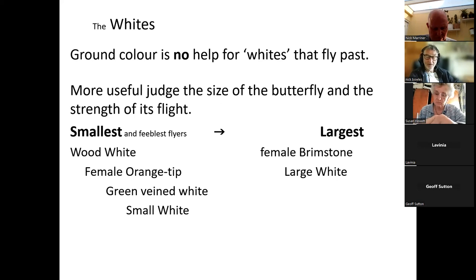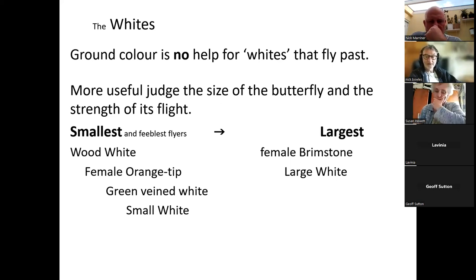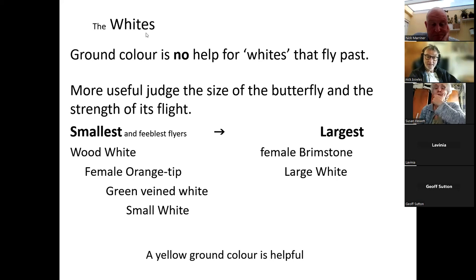A small white looking to feed on flowers or lay eggs will appear to have a slightly more hesitant, slower flight — so you can't use this as a reliable way to identify them. If the white butterfly is obviously bigger than most of these, it's either a female brimstone — which definitely can look white when flying past — or a large white. If they're very close you might be able to see the black tips on the large white, and the brimstone has no black anywhere, but it's a bit optimistic to expect to do that with every large white that goes past.